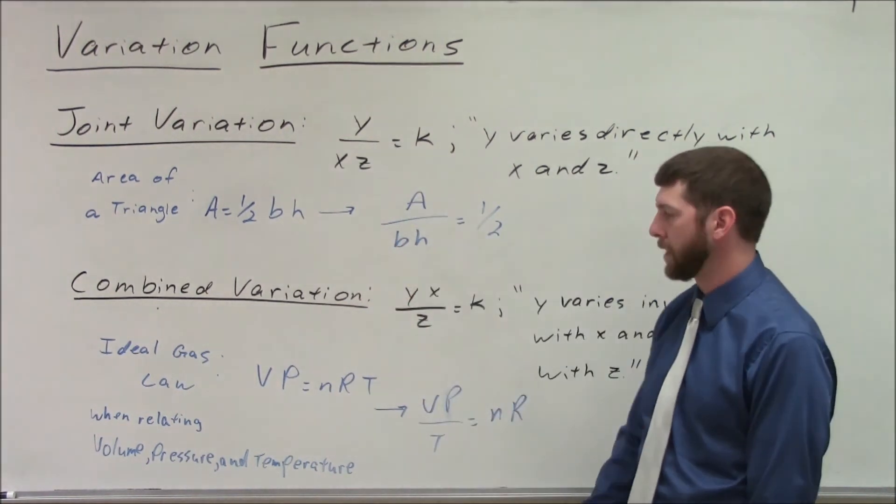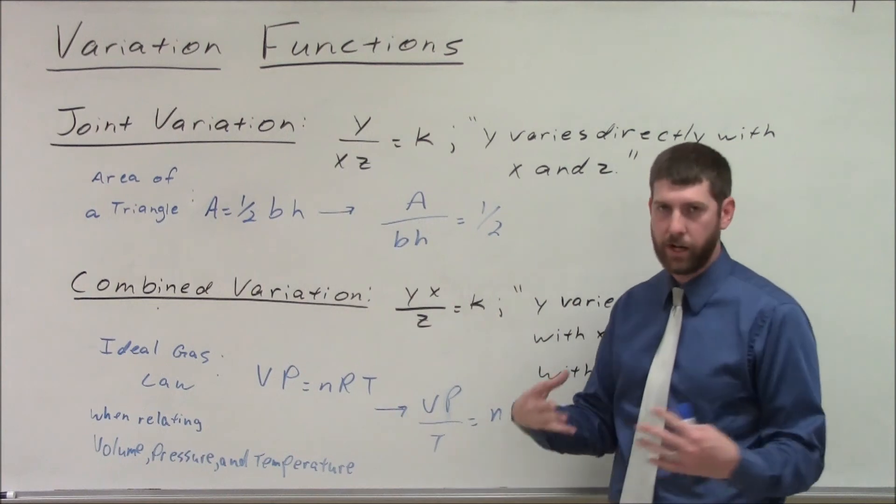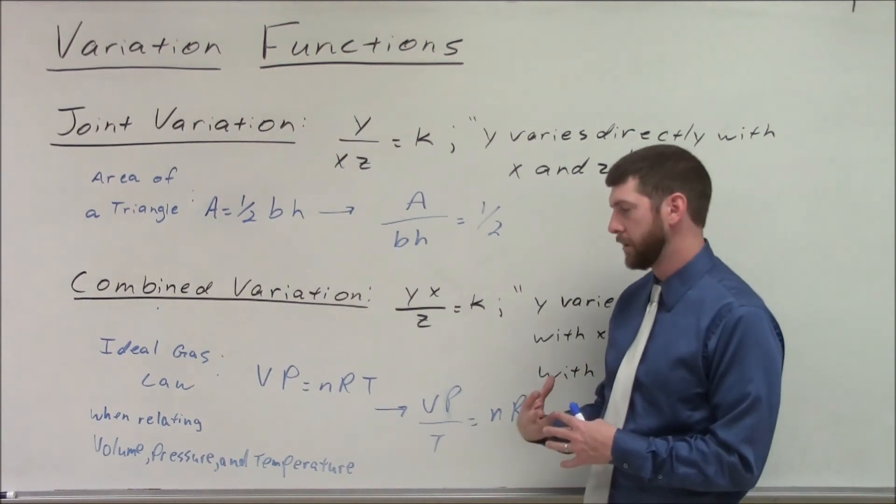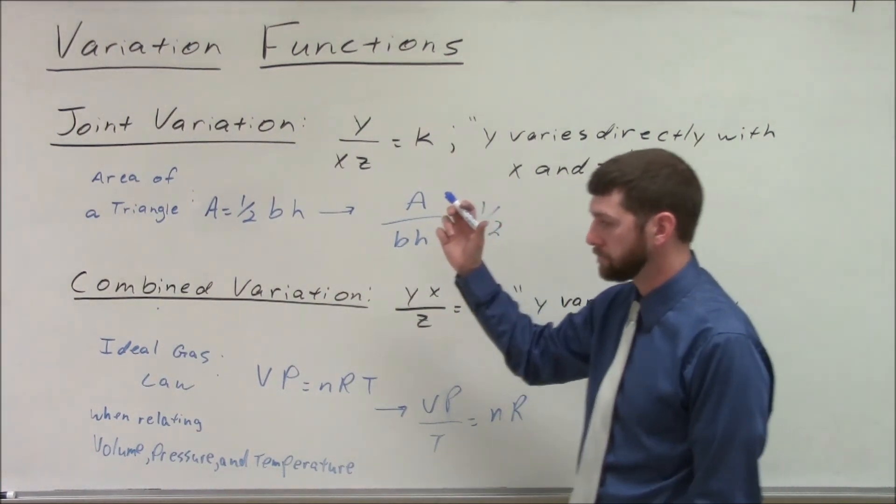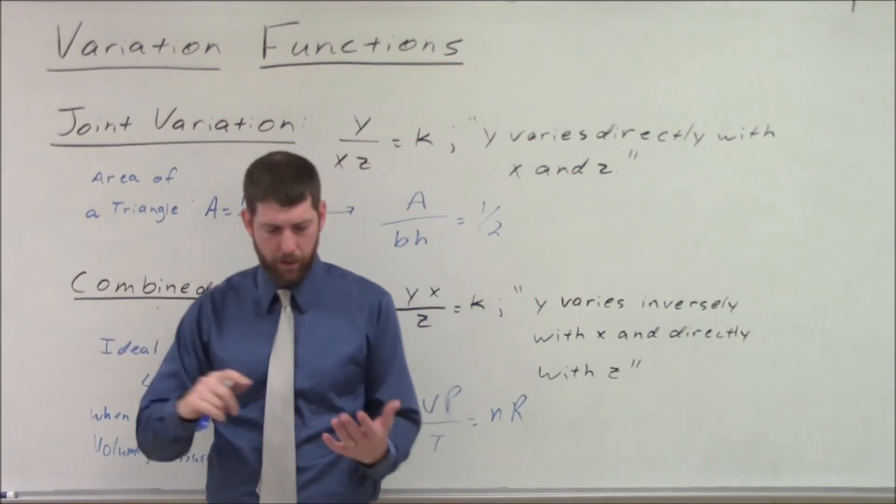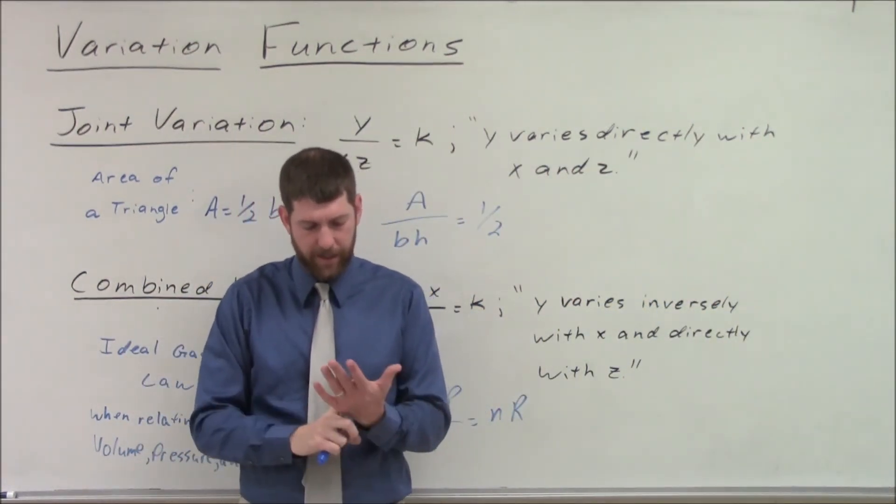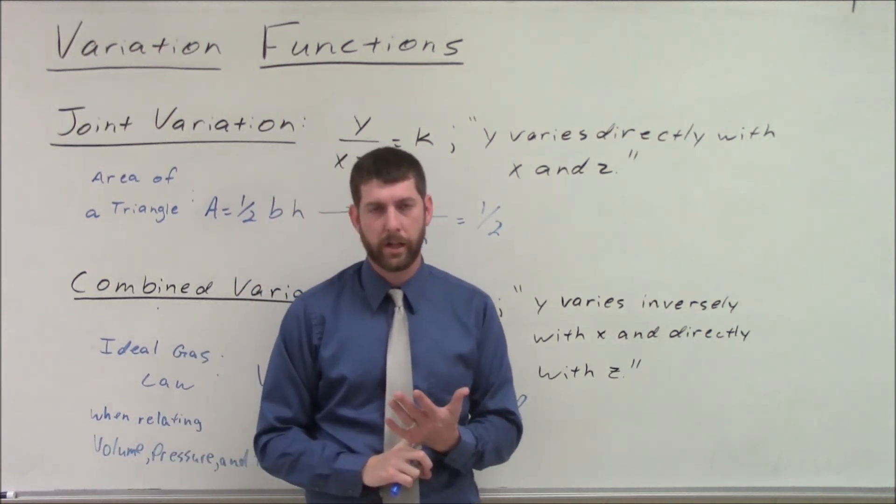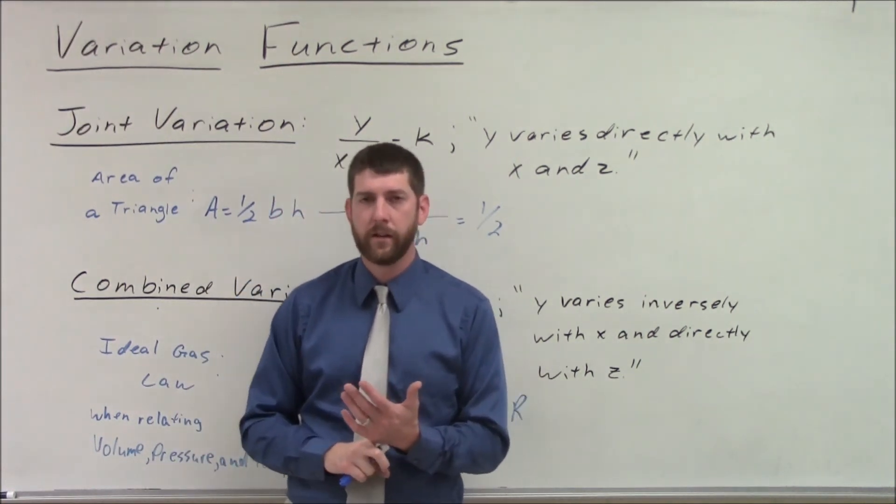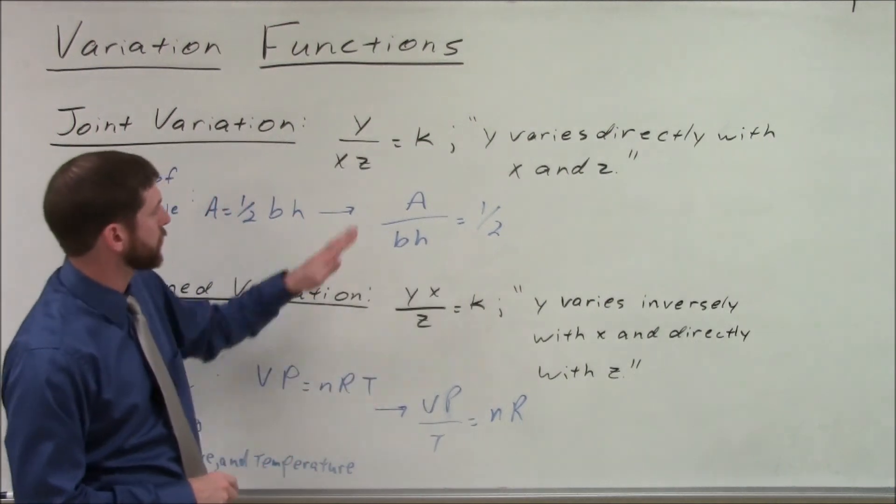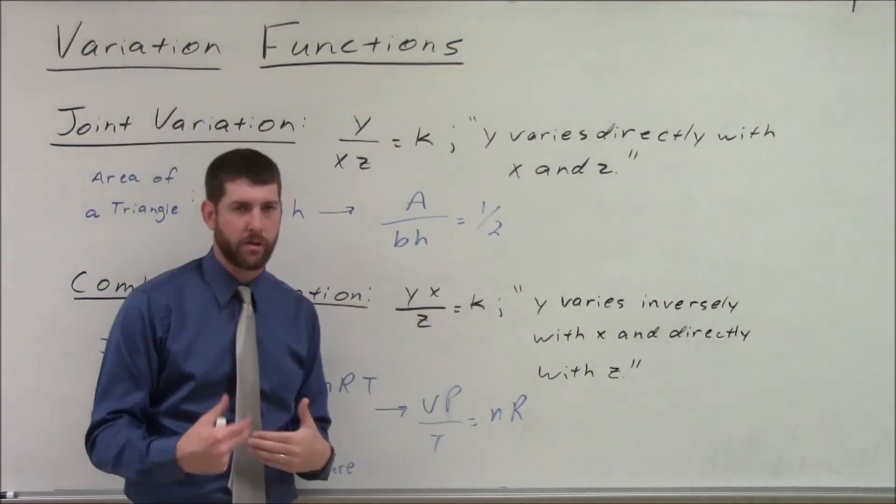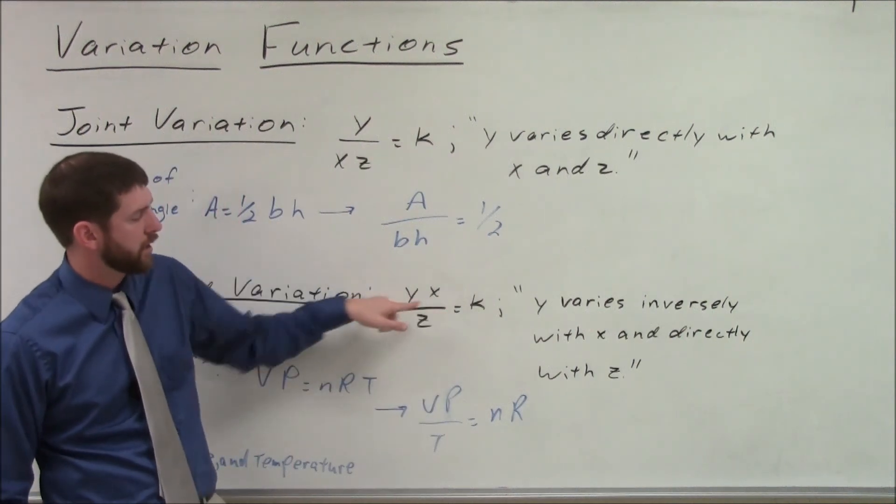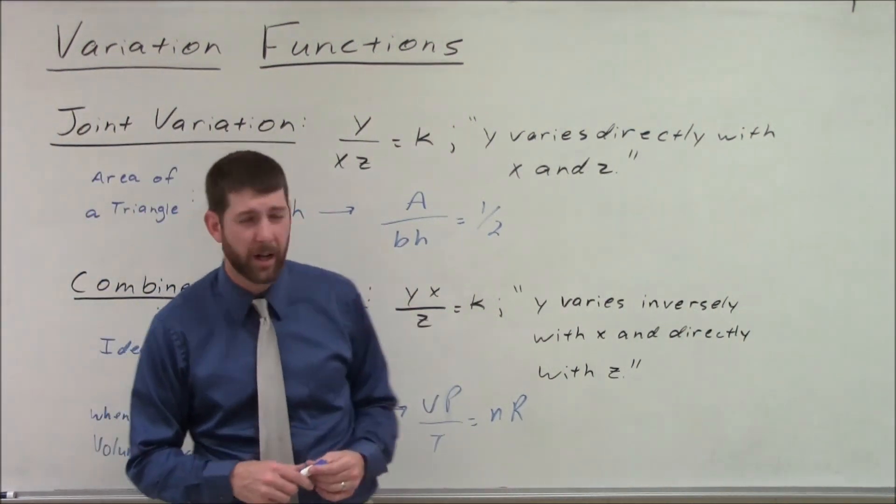So it's really joint variation and combined variation are finding different ways to cram both inverse and direct variation in there. Now, keep in mind, if I want to see if something is directly related, directly varies, then they have a constant ratio. And then if I want to see if they're inversely related, then they're going to have a constant product between the two of them.